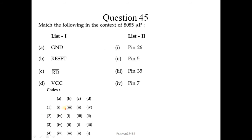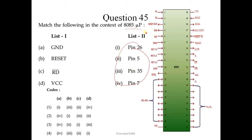Question number 45: match the following in the context of 8085 microprocessor, where pins are given with their corresponding pin numbers. The VSS (ground) pin is pin number 20. The reset pin is pin number 3 (there are two reset pins: in and out, at pin numbers 3 and 36; generally reset is number 3). The active-low read pin is pin number 32. And VCC is pin number 40.